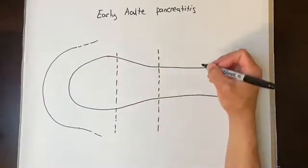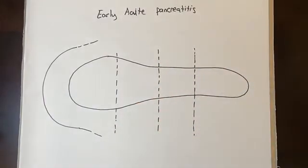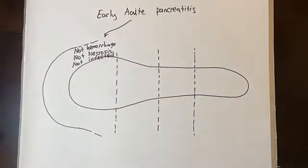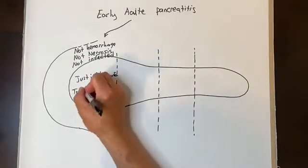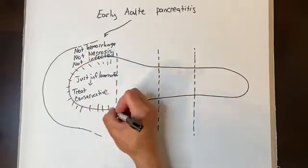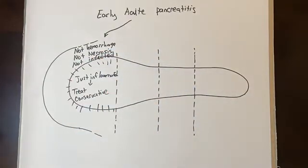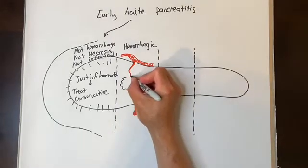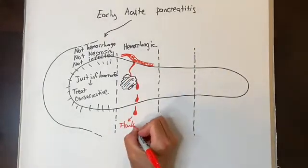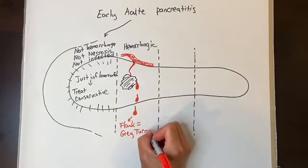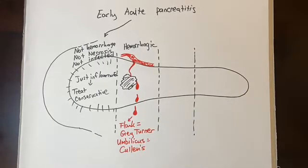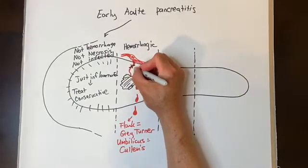Early acute pancreatitis has several complication branches. First is acute non-hemorrhagic, non-necrotizing, non-infected pancreatitis, treated supportively as described. Second is acute necrotizing hemorrhagic pancreatitis: if necrotizing pancreatitis erodes into a large blood vessel, you can get hemorrhagic pancreatitis, classically shown with retroperitoneal blood collections causing a bruise on the flank called a Grey Turner sign, and Cullen's sign — peri-umbilical bruising from blood tracking to the front. Treatment of hemorrhagic pancreatitis is IR embolization.